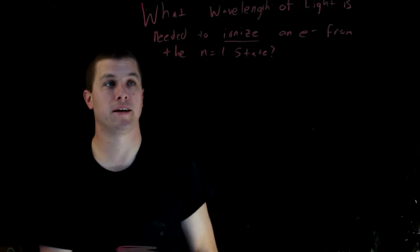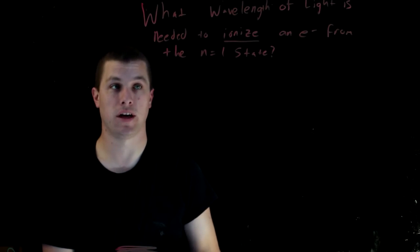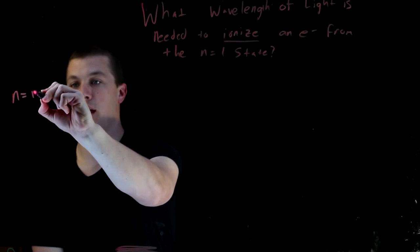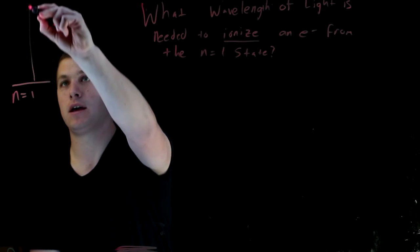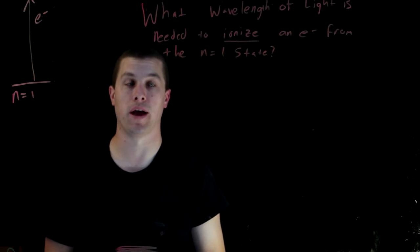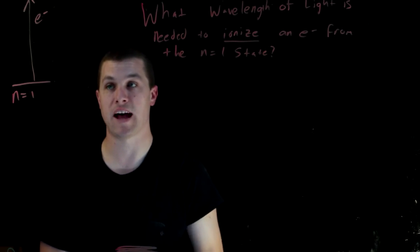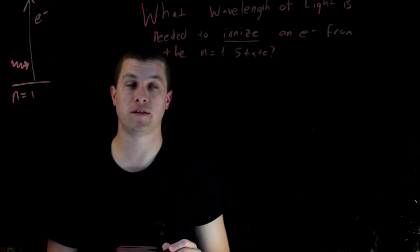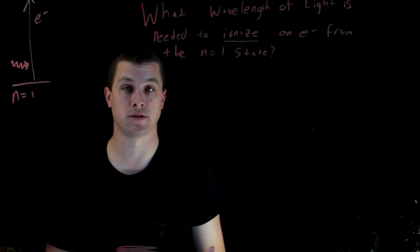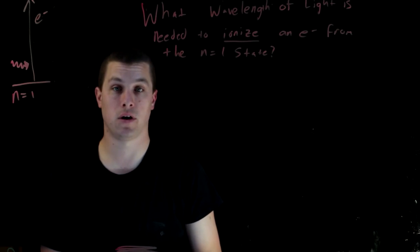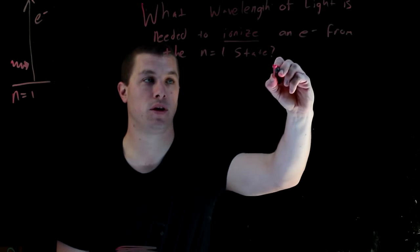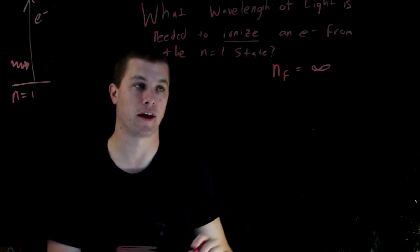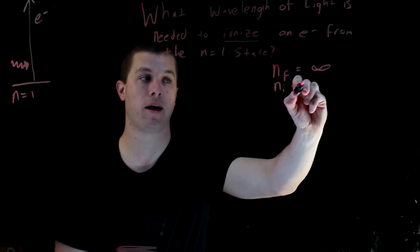This question asks: what wavelength of light is needed to ionize an electron from the n equals 1 state? We want to take an electron from the ground state, n equals 1, and kick it all the way up so it never stops — it keeps traveling away. That's an absorption process — it's going to take up a photon. The final state is n equals infinity, since we're taking the electron all the way away from the atom. Our n_initial is 1.